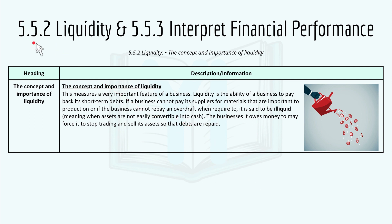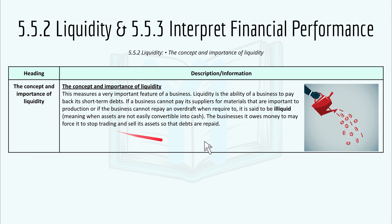Moving to 5.5.2 Liquidity: liquidity is the ability of a business to pay back its short-term debt. If a business cannot pay its suppliers for materials important to production, or cannot repay an overdraft when required, it is said to be illiquid — meaning assets are not easily convertible to cash. The businesses it owes money to may force it to stop trading and sell its assets so that debts are repaid.